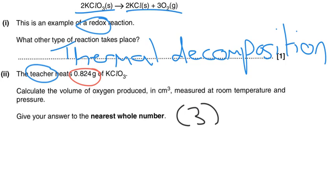Calculate the volume of oxygen produced in centimetres cubed, measured at room temperature and pressure. This is really interesting, because they want it in centimetres cubed, and they want it to the nearest whole number. So that third and final mark, which is actually going to be a combination of those two accuracy points, is going to be really important.